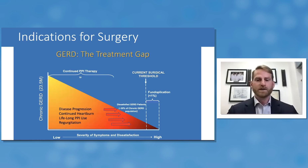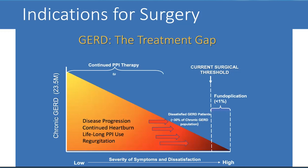Very few patients with GERD actually pursue fundoplication despite the enormous number of GERD patients nationwide. About 30% of patients with chronic GERD are dissatisfied with medical management but never pursue surgical treatment — this is the therapy gap. These patients should at least receive a surgical consultation to consider operative management, and for patients with hiatal hernia that includes hiatal hernia repair.